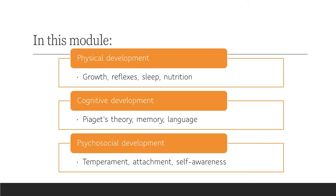In this module, you're going to be learning about physical development — things like growth, reflexes, sleep, and nutrition. You'll also learn about cognitive development: how thinking changes during this stage, Piaget's theory, memory, and language. Then you'll cover psychosocial development, including Erikson's theory, temperament, personality, attachment and its short- and long-term effects, and self-awareness.